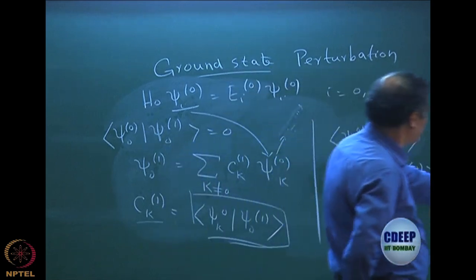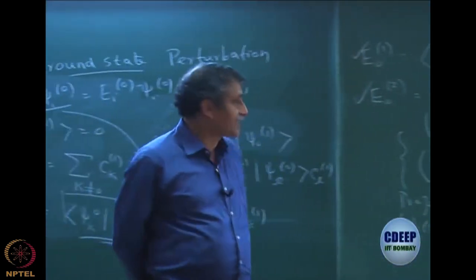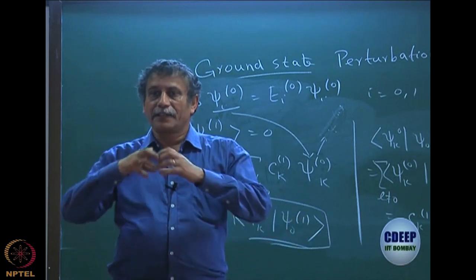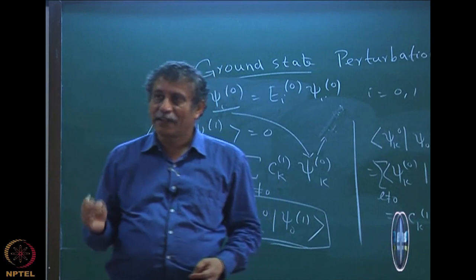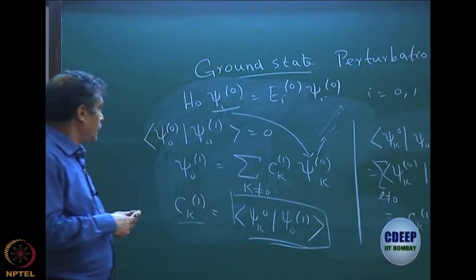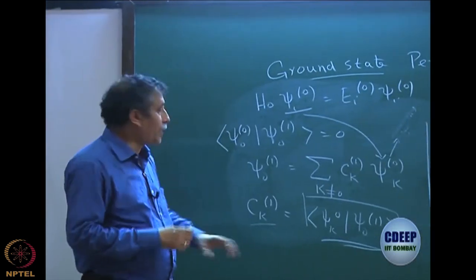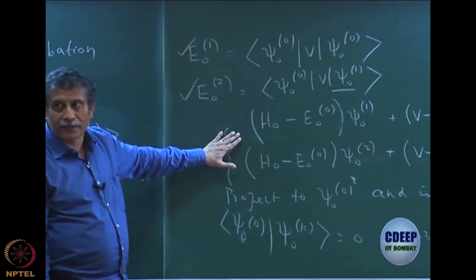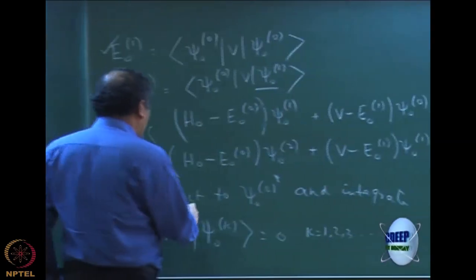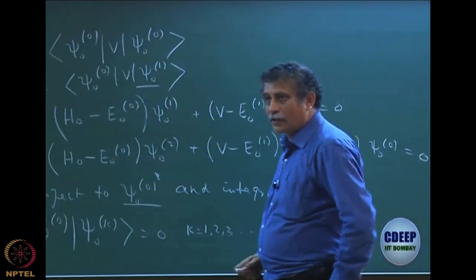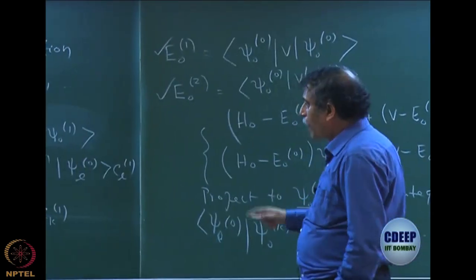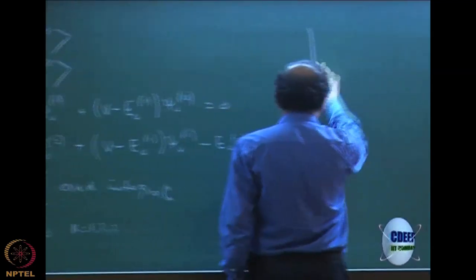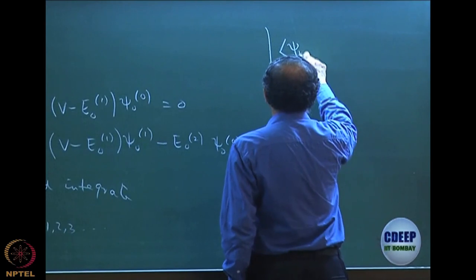That is the assumption of intermediate normalization — it is a choice. I already said that the normalization is my choice, and I explained in the last class that if I do intermediate normalization, the full function will not be normalized but I can re-normalize later. So we want to evaluate ψ01. I am going to go back to the first order equation and try to evaluate this by projecting onto ψk0 for all other k.